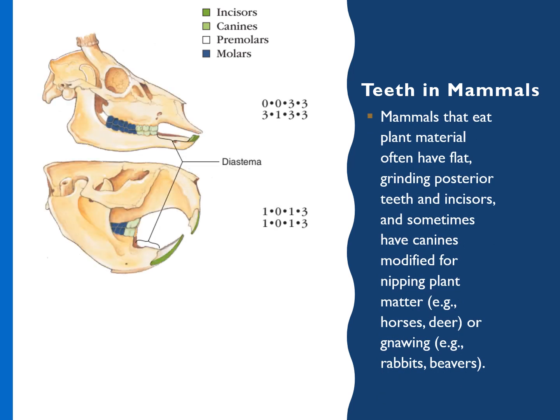Mammals that eat plant material often have flattened grinding posterior teeth. Sometimes canines are modified for nipping plant matter — for example in horse and deer. In some cases, a modification of canines is for nipping — for example rabbits or beavers.